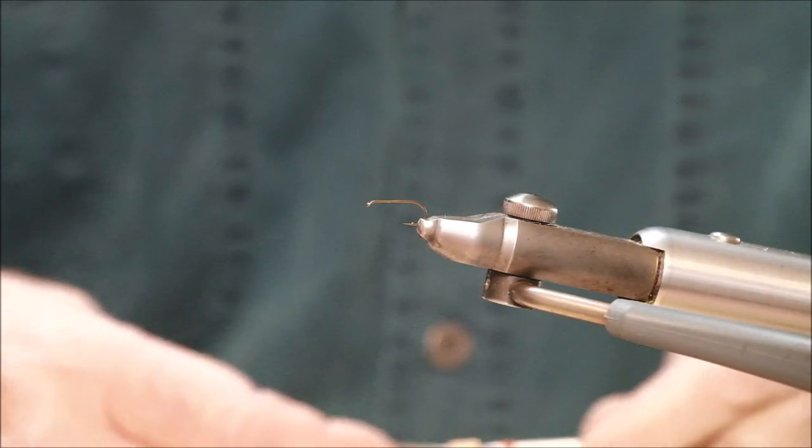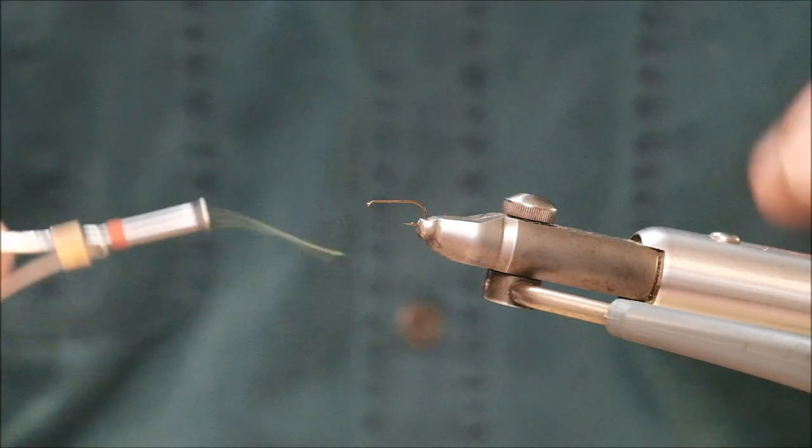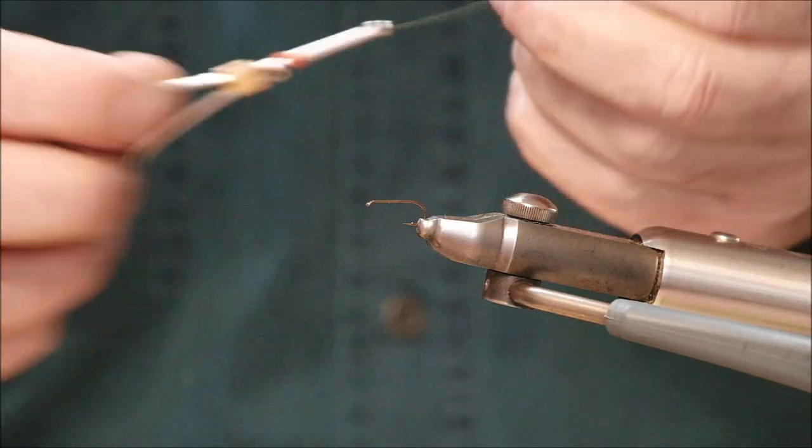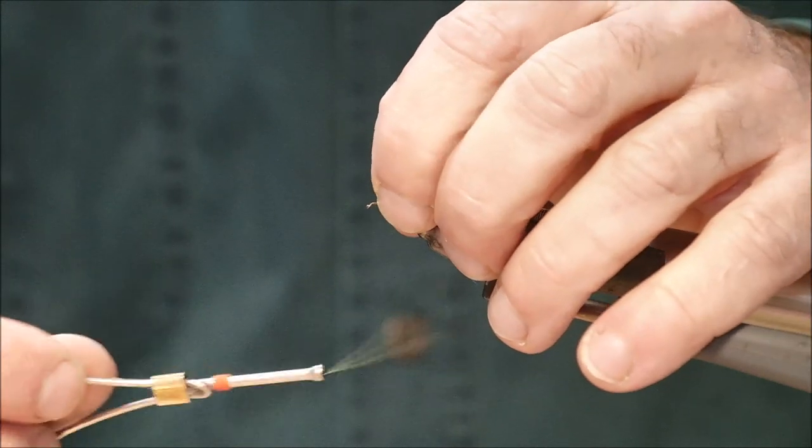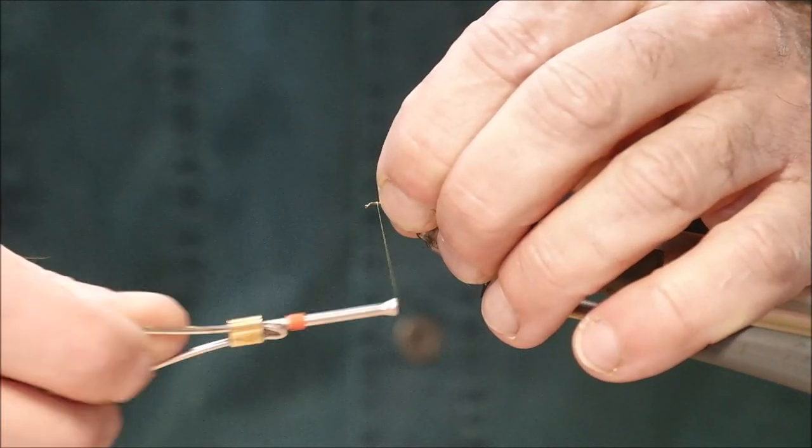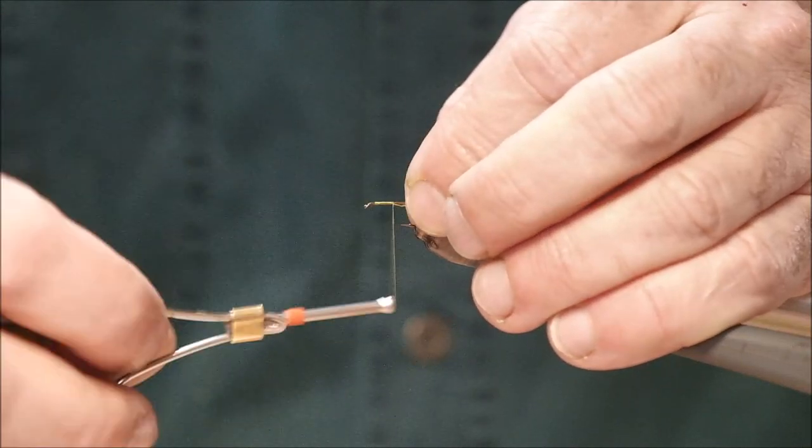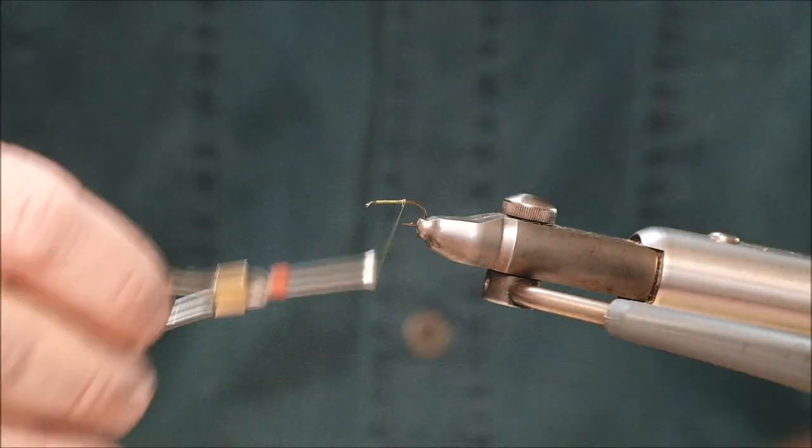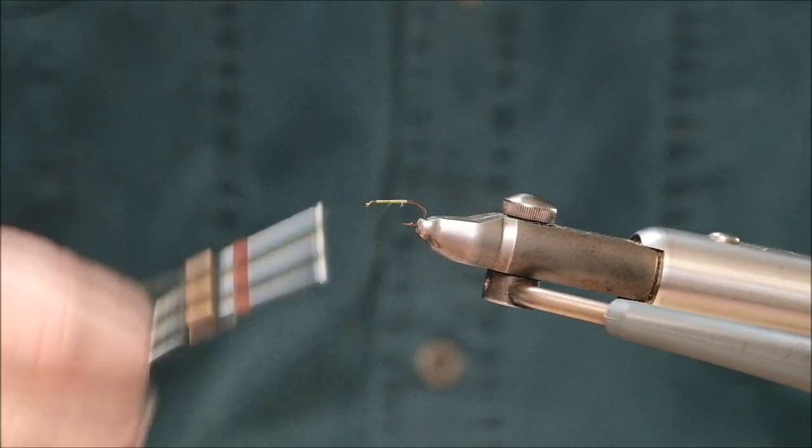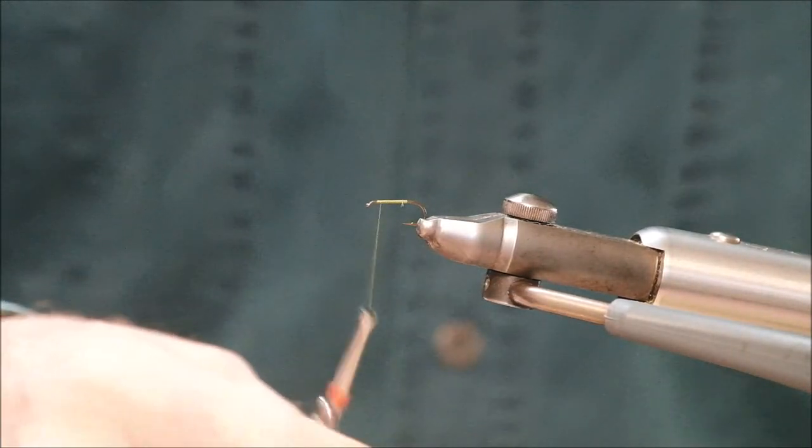Down through the years, many different materials have been used to tie the body of a fly. Probably the simplest of all is just your tying thread or tying silk. Basically, all it means is a wrap of tying silk the full length of the body. And there you are. There's the simplest form of a fly body. It doesn't get much simpler than that.